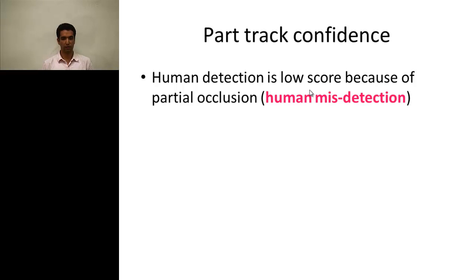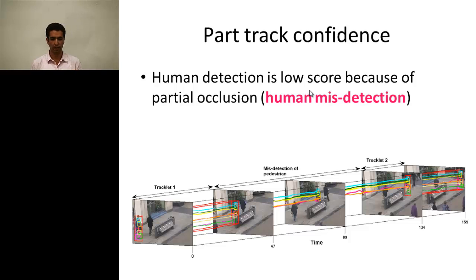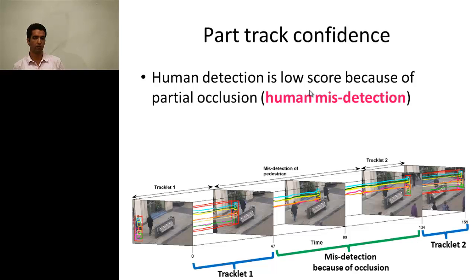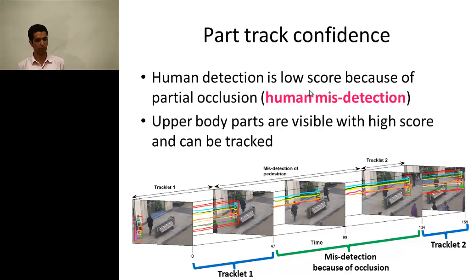For the part track confidence term: if we have a track where in the first and third sections the person is fully visible, but in the middle only the upper body is visible, we cannot track the full person in the middle. But since we have the upper body parts, we can use that as an additional cost term to connect the two tracklets and obtain a longer track for that person.